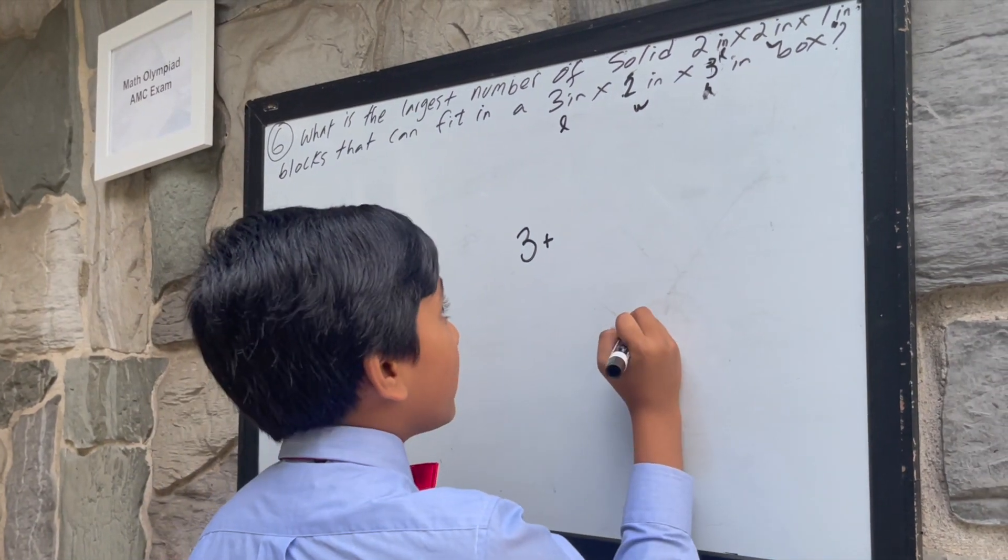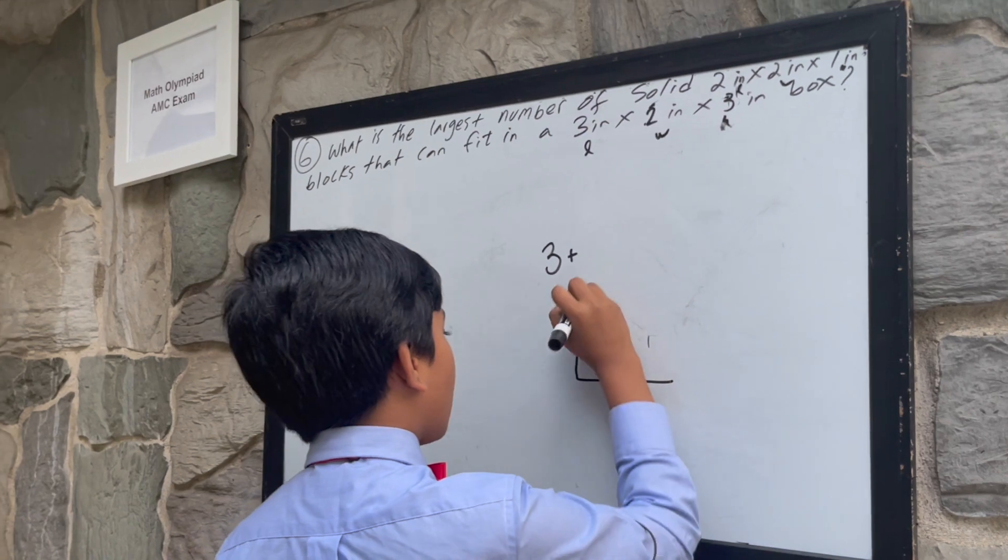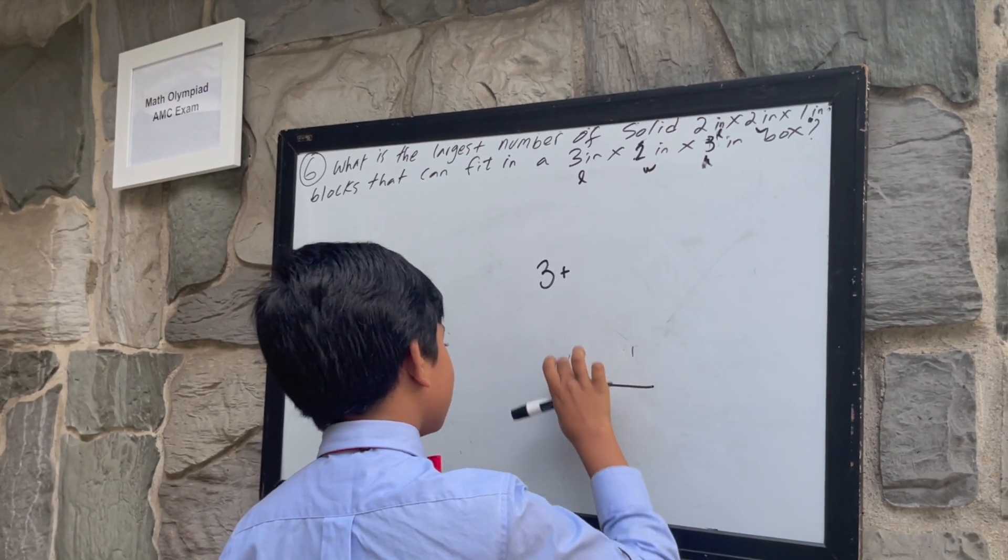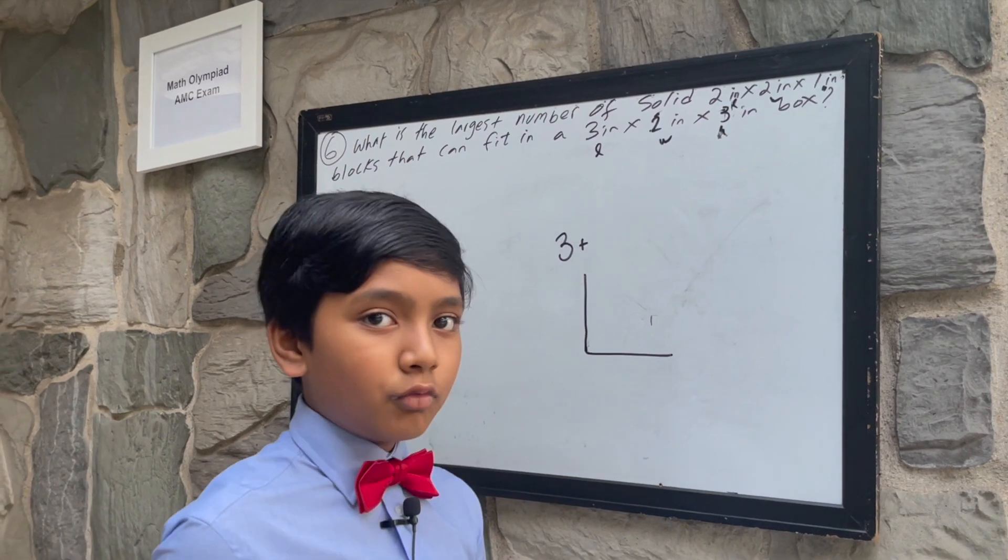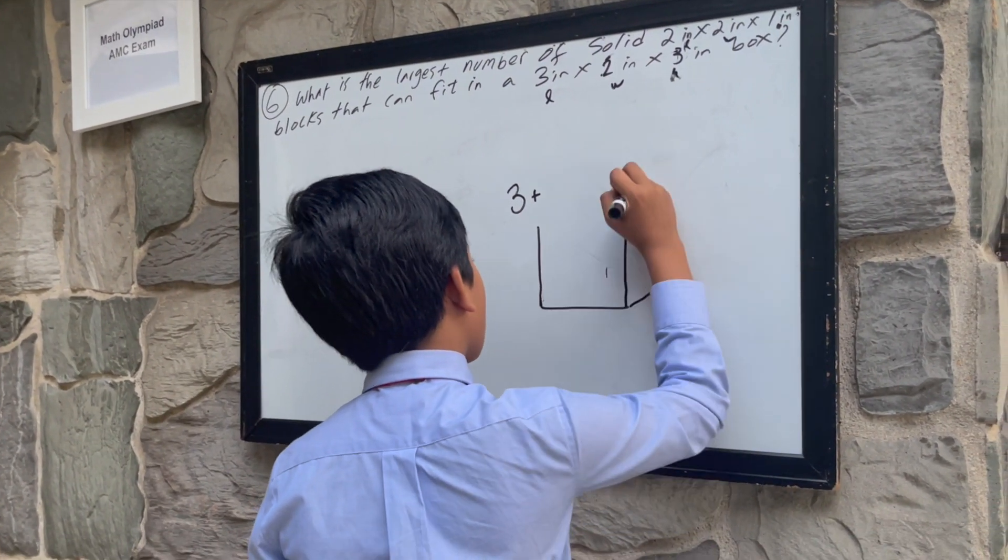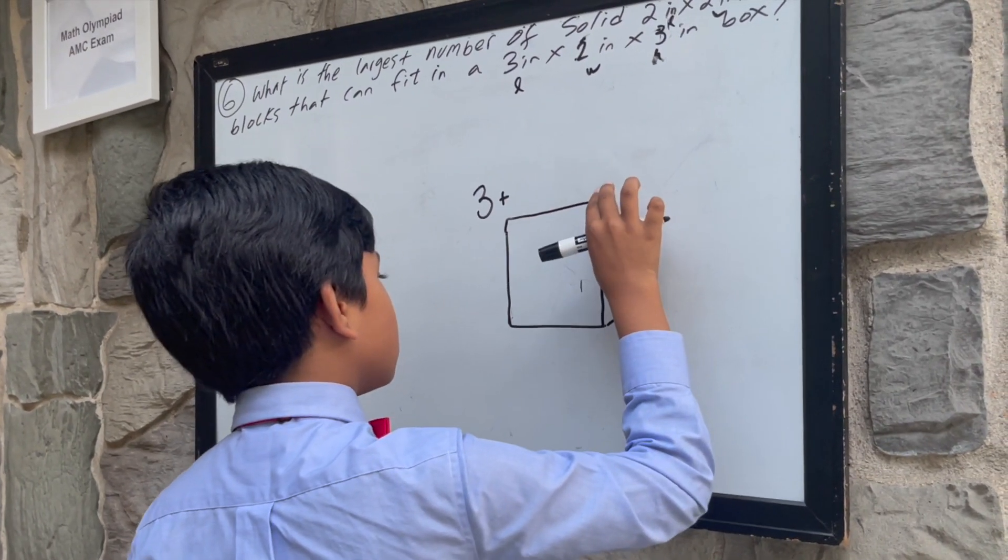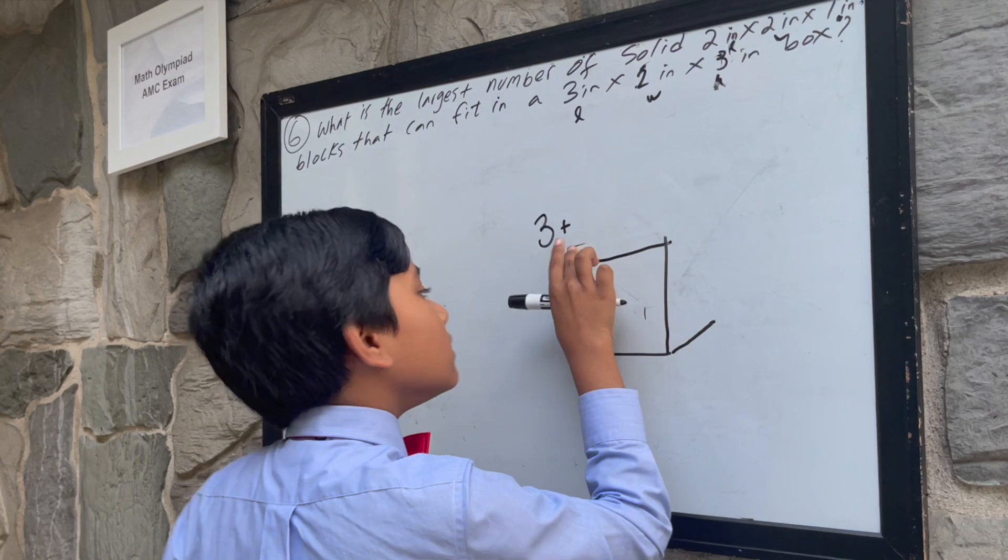Well, let's illustrate it in a 3 by 2 by 3 box. And then, you have the width being 2. Let me just make it like that.